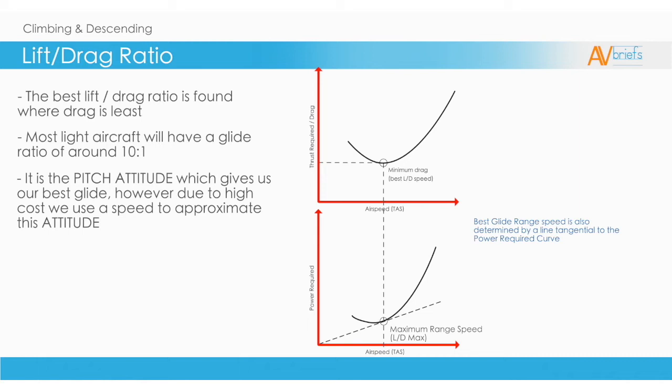In the upper graph you can see that at the point where drag is least in the total drag curve is where we get lift to drag max. That gives us minimum drag and maximum lift. In the lower graph, it is the same speed, but it is found by running a tangential line on the power required curve.